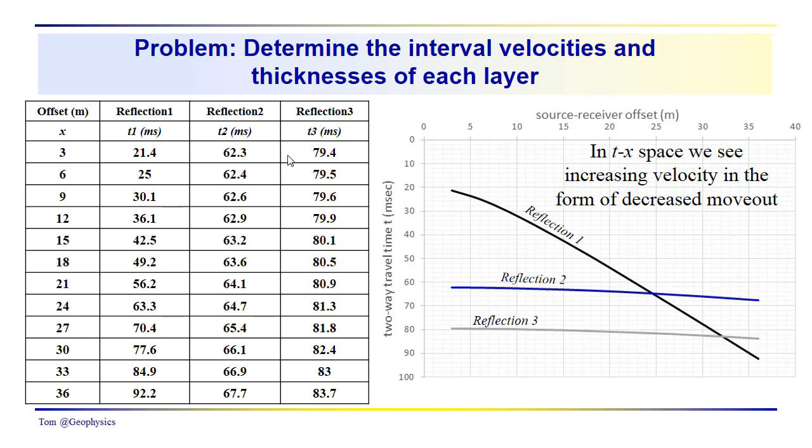Then we have these two-way travel times for three reflection events, and they're displayed over here in the time distance plot. In this TX plot we see reflection hyperbola, and we can see that the slopes decrease with depth. It was really hard to tell whether there was an increase or decrease in slope from reflector 2 to reflector 3, but this will turn out to be kind of interesting as we go through the analysis.